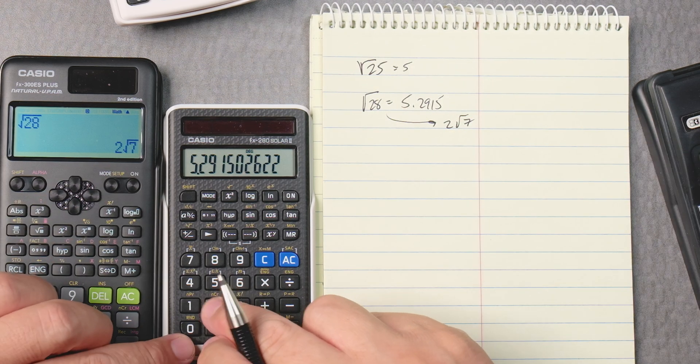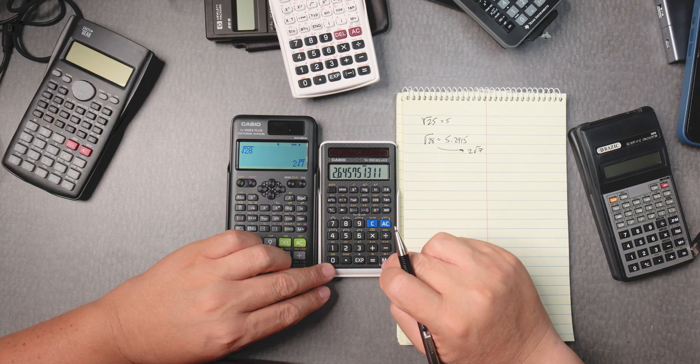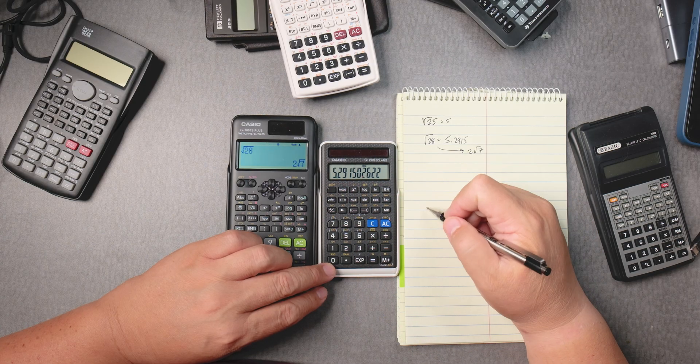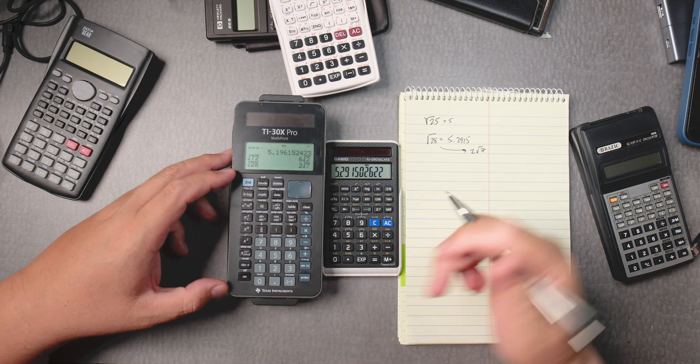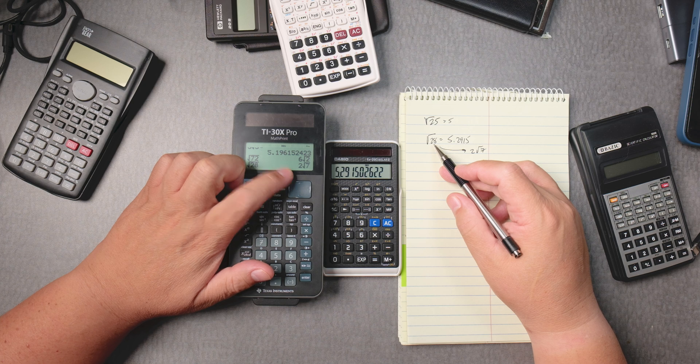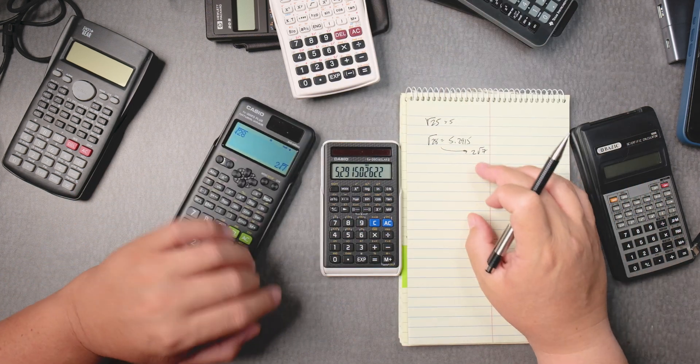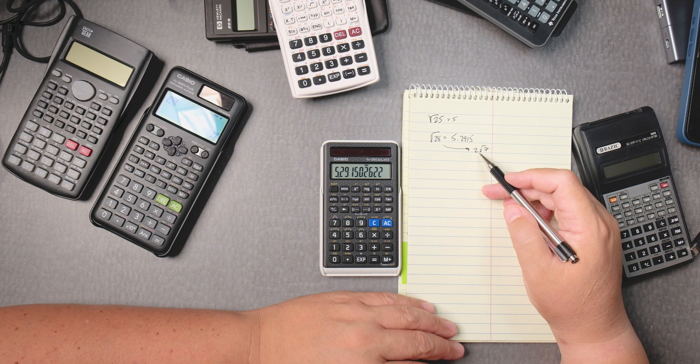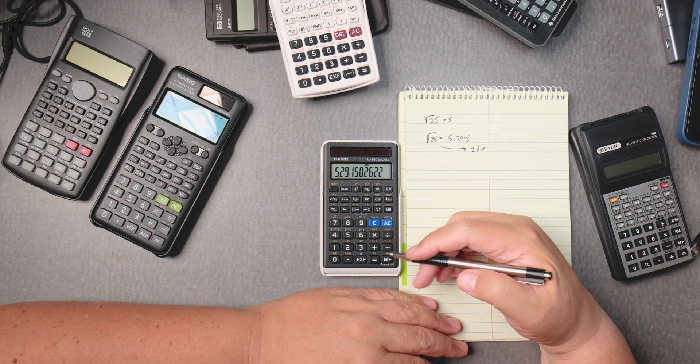If you go over here, you can say 2 times 7 square root equals, gives you the same answer. Another calculator that can do simplifying these radicals, right? Square root of 28 can be reduced into radical form. So this particular calculator doesn't have that ability, which is fine.